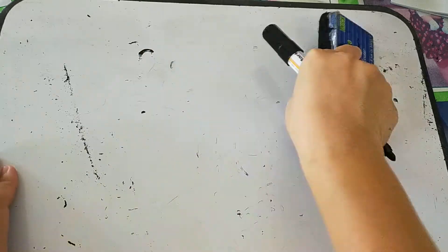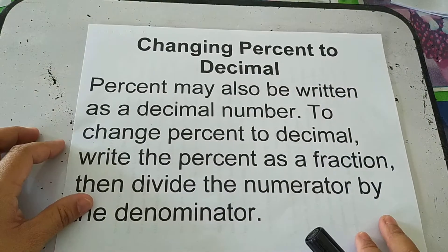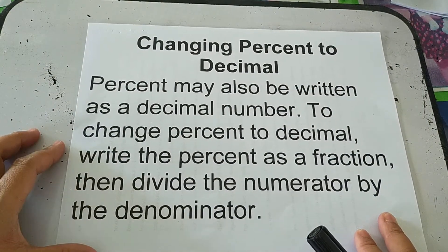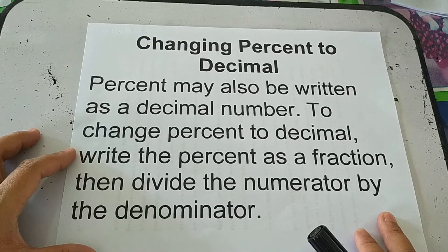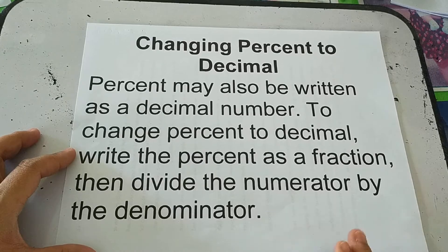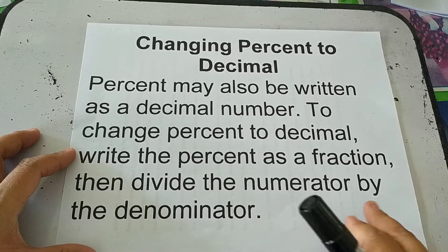Okay, next. Changing percent to decimal. Percent may also be written as decimal number. To change percent to decimal, write the percent as a fraction, then divide the numerator by the denominator.